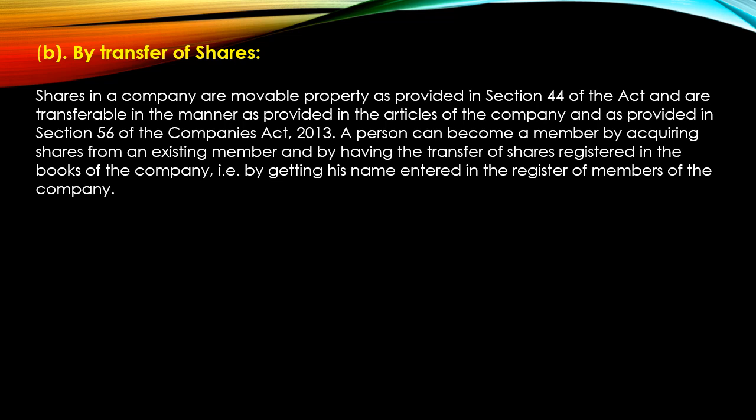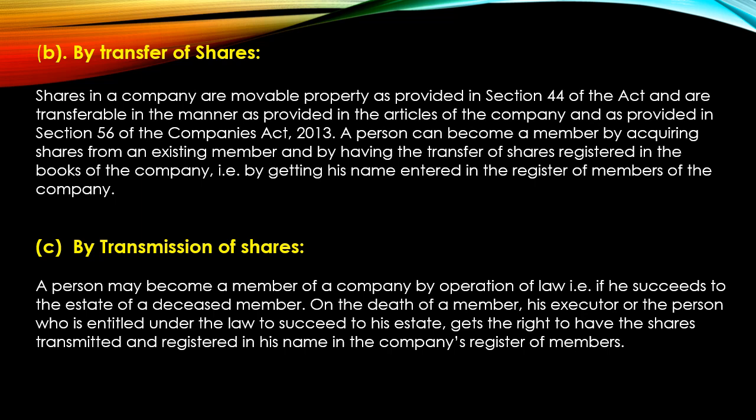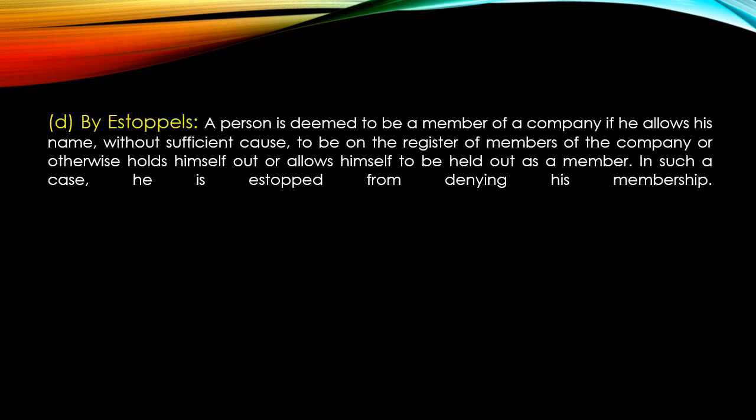Next is by transmission of shares. If the shareholder dies, the shares automatically transfer to the nominee. When the shares are transmitted, the nominee's name is registered in the register of members, and the nominee becomes a member of the company. Next is by Estoppel. Estoppel means a person cannot deny a fact stated earlier — if you have given any statement before, you cannot go back on that statement.